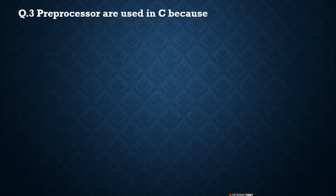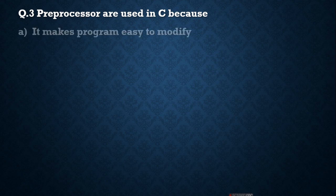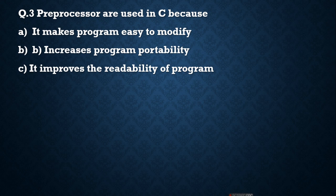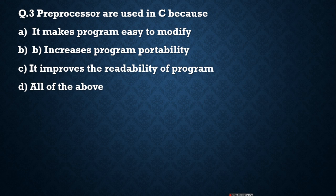Next question: Pre-processors are used in C because — first option: it makes the program easy to modify; second option: increases the program's portability; third option: it improves the readability of a program; last option: all of the above. All three reasons are valid — it makes the program easy to modify, increases portability, and improves readability. So the answer is D, all of the above.